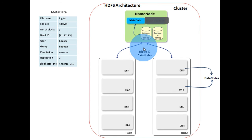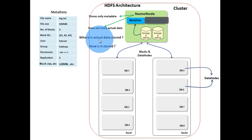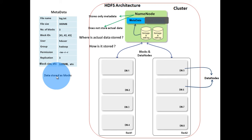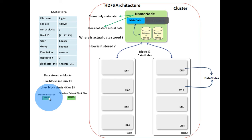Before explaining block location, you need to know about blocks and data nodes. Till now we have not come across actual data storage — we saw that the name node only stores metadata and does not store actual data. Data in HDFS is stored as blocks. Blocks in HDFS are similar to blocks in any traditional file system like Linux. In traditional file systems, block size is a few kilobytes, usually 4K or 8K. In HDFS, the default block size is 64 megabytes, and in the cloud era it is 128 megabytes.